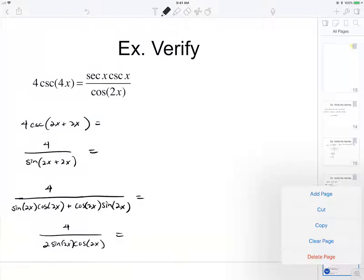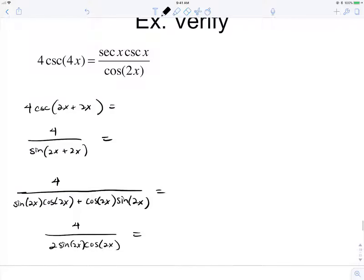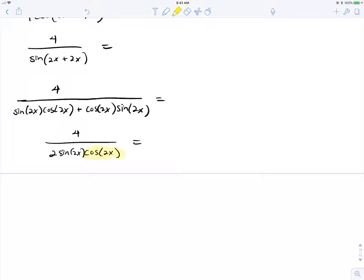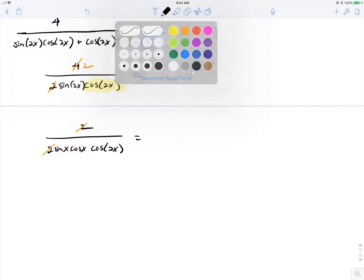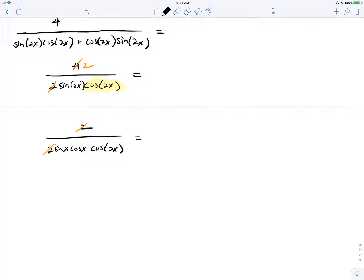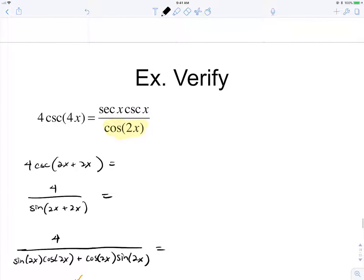So we have 2 sine 2x times cosine of 2x. We're not done. Notice that in this identity that we have cosine 2x in the denominator. So we're going to want to leave this alone. But we can use the double angle identity for sine. And also noticing that this 2 will cancel the 2 up here. So now we'll have a 2 in the numerator. So 2 over 2 times sine times cosine times cosine of 2x. And then those 2s will cancel. And 1 over sine is cosecant. 1 over cosine is secant.